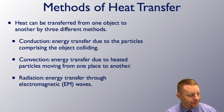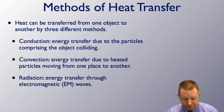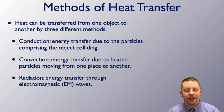So methods of heat transfer. Heat can be transferred from one object to another by three different methods. The first conduction is energy transferred due to the particles comprising the object colliding. As those collisions transfer down the object, the average kinetic energy of all of those particles becomes more and more similar and you get a uniform temperature throughout the object. You have transferred heat from one end to the other.